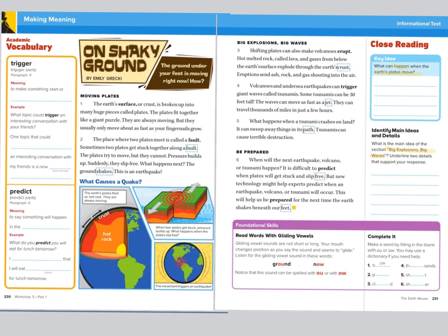So I'm going to go to the story right now and highlight that title because I know that's something important I need to use to answer the question. I'm also going to think as I'm reading: is this descriptive, compare and contrast, problem and solution, cause and effect, or chronological and sequential — telling how something happens in order?